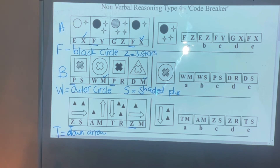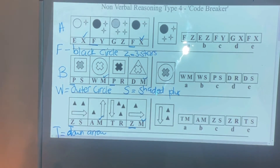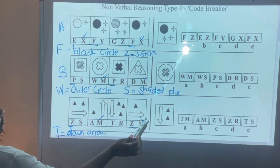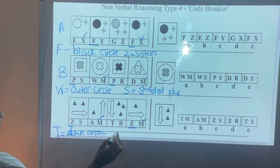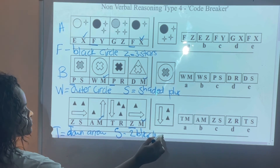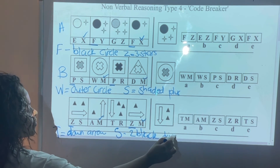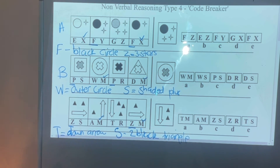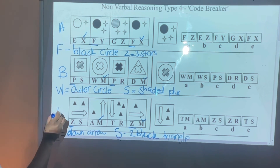Now let's move to the next letter. Where do we have the same letter? We have an M there and an M there, which means M is similar in some way. We've got one triangle which is shaded on there, but on the shape we're looking at we've got two — two black triangles — which means it matches S. So S is for two black triangles. My answer would be TS, which is E.